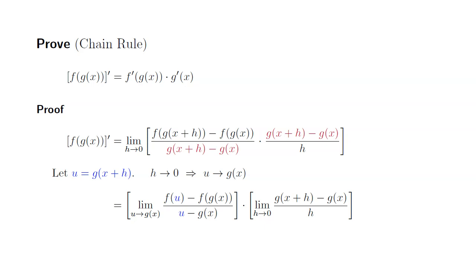Then you can see that the first limit is the definition of f prime evaluated at g of x. And the second limit is the definition of g prime of x. So we have f prime of g of x times g prime of x, which is the right-hand side of the chain rule.